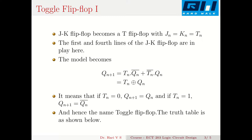The model of the JK flip-flop is Qn+1 equals Jn·Qn-bar OR Kn-bar·Qn. Here Jn equals Tn and Kn-bar equals Tn-bar, so it becomes Tn·Qn-bar OR Tn-bar·Qn. Since there is only one input Tn, where Jn equals Kn, this simplifies to Qn+1 equals Tn XOR Qn. If Tn equals 0, then Qn+1 equals Qn.